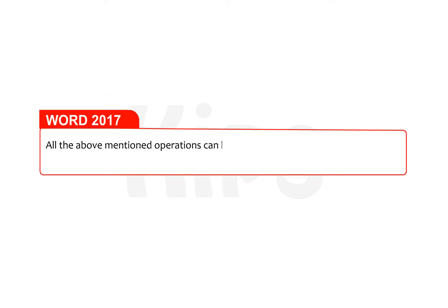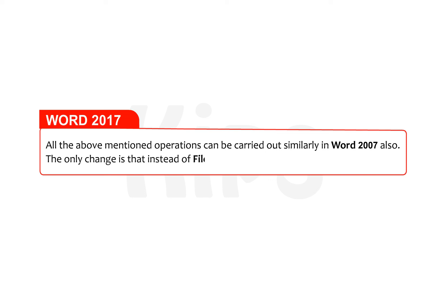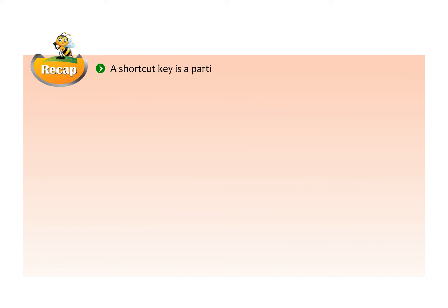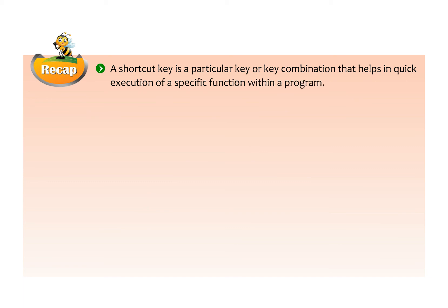Students, note that all the above operations can be carried out similarly in Word 2007 — the only change is that instead of the File tab you will find the Office Button. As a recap: a shortcut key is a particular key or key combination that helps in quick execution of a specific function within a program. Making changes in a document is called editing.